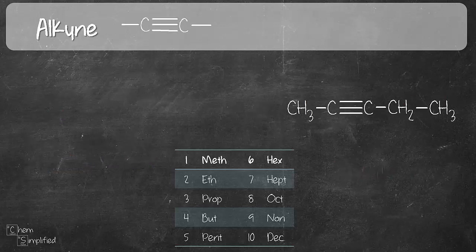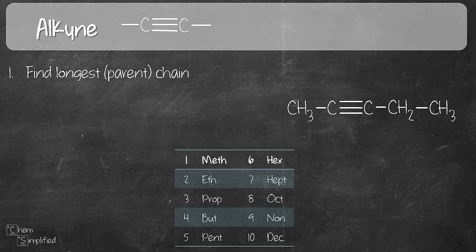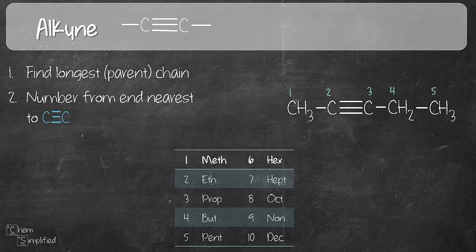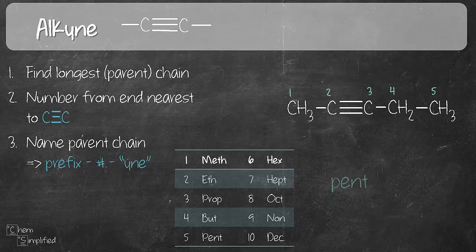I told you if you can do alkene, you can do pretty much a lot of the organic compounds. Now let's bring this one more step higher, which is alkyne that has C≡C triple bond. So same thing, find the longest chain. In this case, we have 5 carbons and make sure that longest chain covers your C≡C triple bond. That's a similar rule to alkene. So now when you number, left-hand side is still the nearest, so we're going to number 1 through 5.